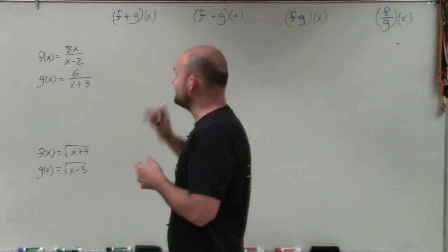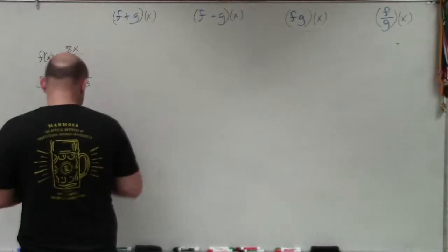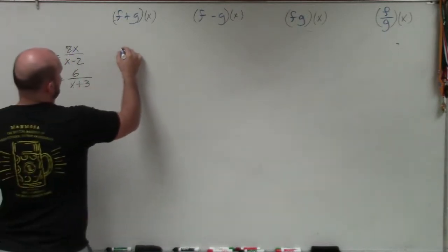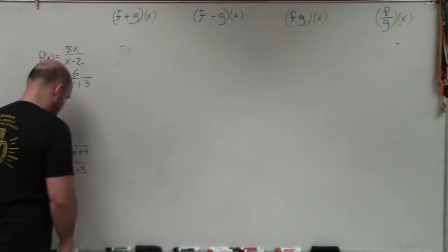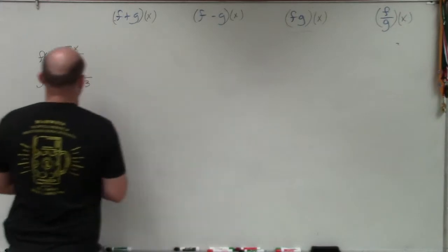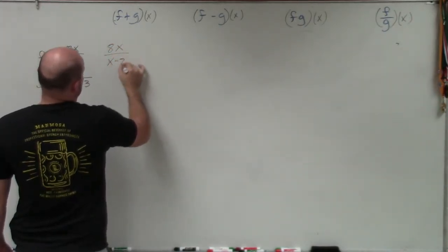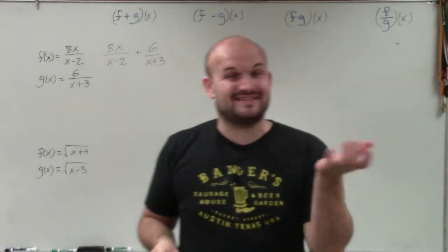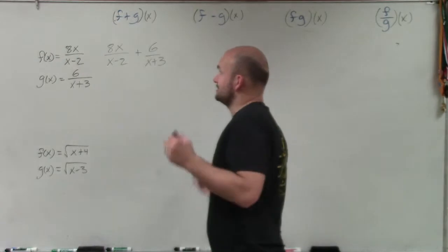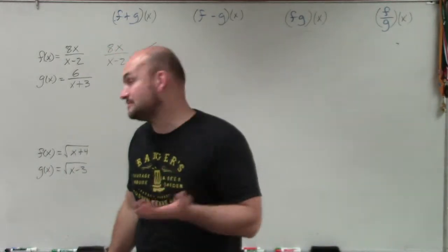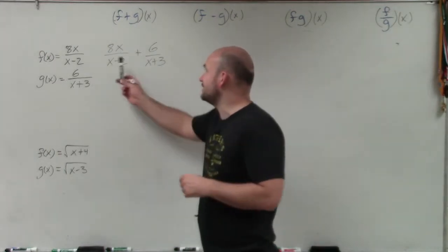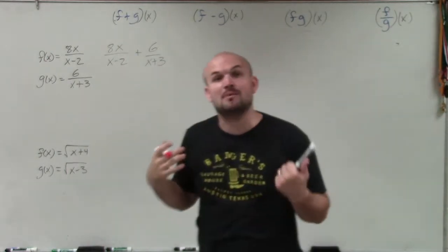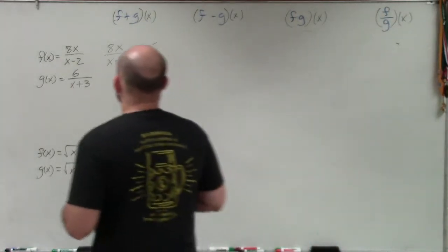First of all, we're going to add two rational functions, just like in Algebra 2. I have 8x over x minus 2 plus 6 over x plus 3. When adding fractions, you can only add fractions with exactly the same denominator. Our denominators are not the same, so we need to obtain the common denominator. They have no common factors, so we multiply them to get the least common denominator: x minus 2 times x plus 3.